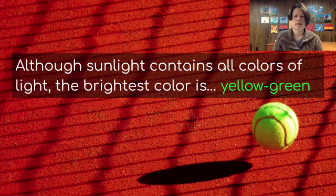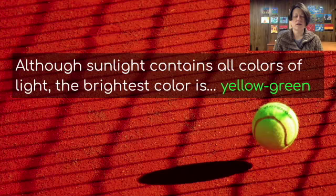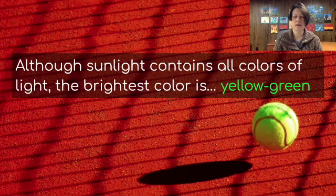Although sunlight contains all colors of light, the brightest color for us is yellow-green. That's what our eyes, God designed our eyes to pick up the best, and so it is the most visible to us.